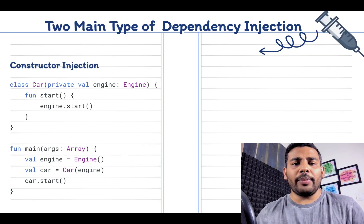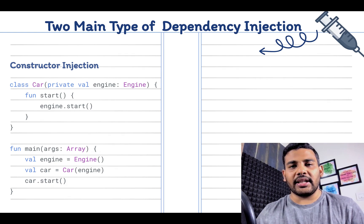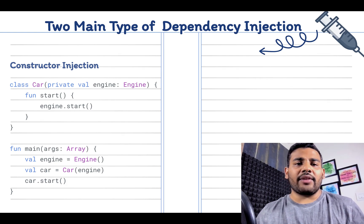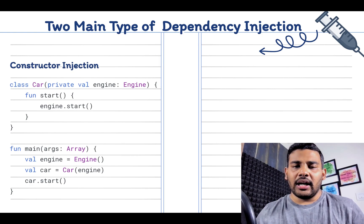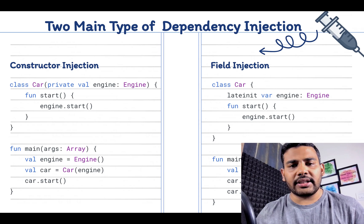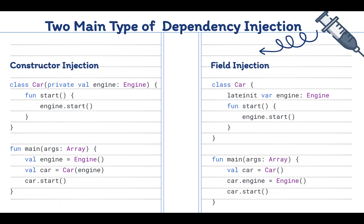There are two main types of dependency injection. First one that we already seen is called constructor injection. Another solution is called field injection, as you can see here. In both approaches, Car is not constructing its own Engine, but the Engine is being injected into the Car.